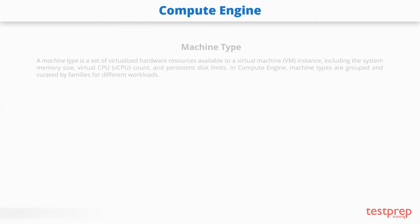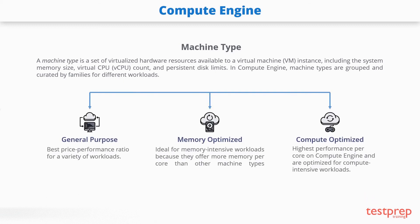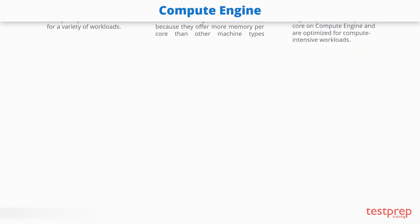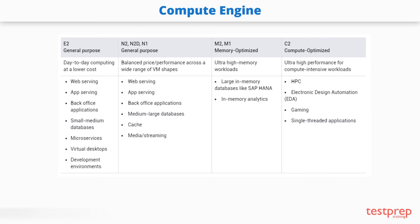Let us now look at what machine types are. A machine type is a set of virtualized hardware resources available to a virtual machine instance, including the system memory size, virtual CPU count, and persistent disk limits. In Compute Engine, machine types are grouped by families for different workloads. You can choose from General Purpose, Memory Optimized, and Compute Optimized families. General Purpose machine types offer the best price-performance ratio for a variety of workloads. Memory Optimized machine types are ideal for memory-intensive workloads, offering more memory per core. Compute Optimized machine types offer the highest performance per core and are optimized for compute-intensive workloads. There are also GPUs you can use to accelerate workloads. The table here shows the machines available and which machine type is suitable for which task.